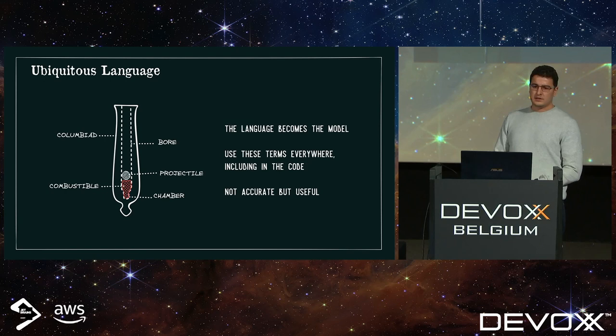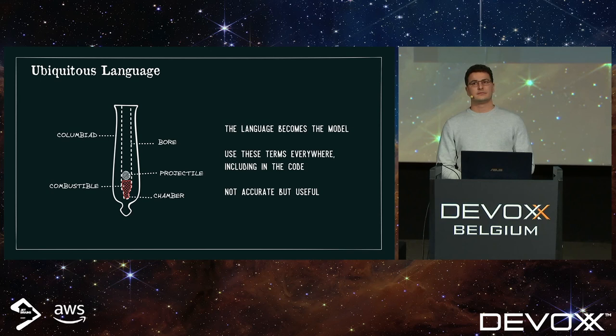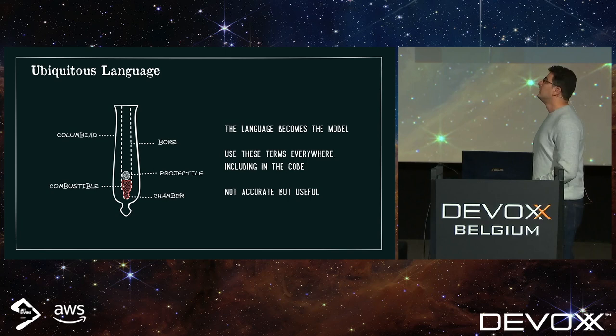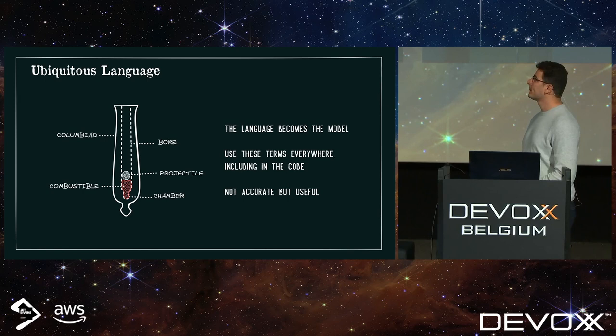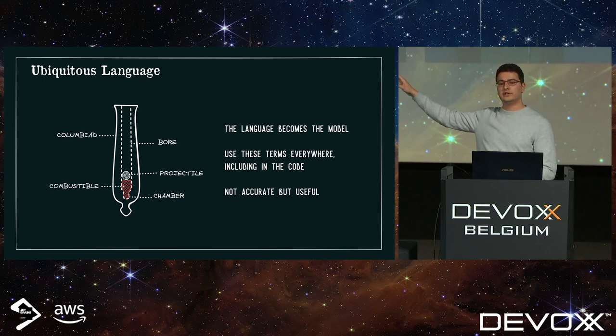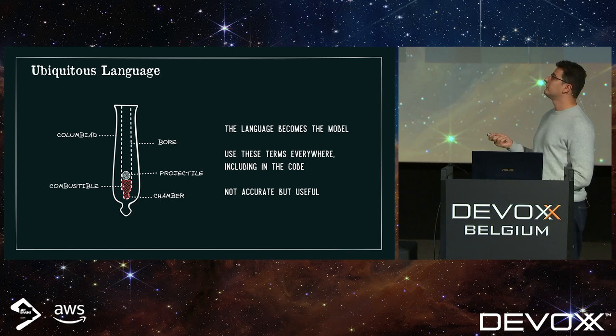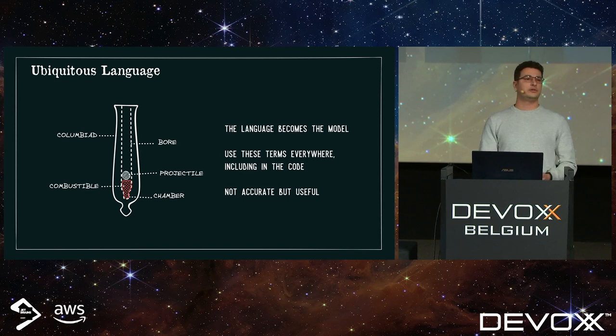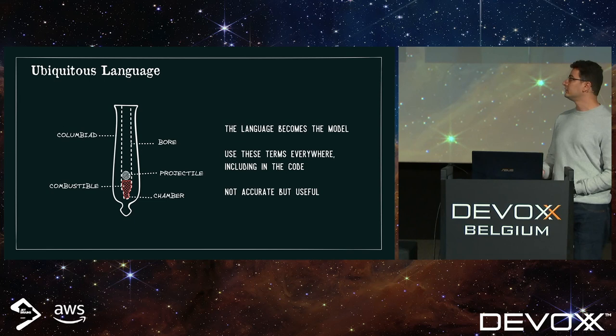We agree on the terms we will use to be precise and represent them on a model. We talk of a columbiad instead of cannon — a subtype we will use. We talk of bore, projectile, chamber, and combustible. Our language became our model — the abstraction of domain knowledge we will use. The terms in this model are the ones we will use in all communication: when we talk, in diagrams, in specs, and most importantly in the code. Because they are everywhere, we call this a ubiquitous language — a language that is everywhere.